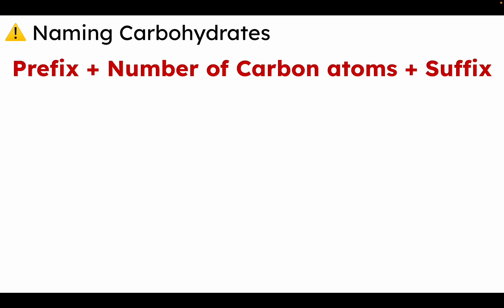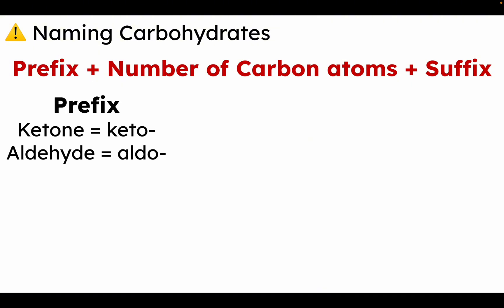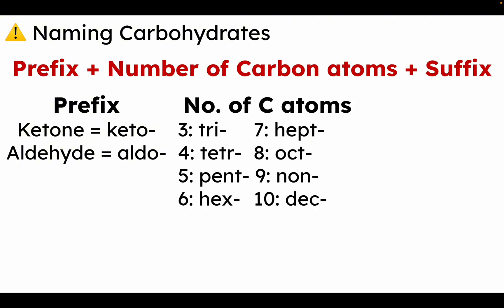Recall from the previous video, we used the formula: prefix plus number of carbon atoms plus suffix. For the prefix, if you see a ketose in the Fischer projection, the prefix would be 'keto.' If you see an aldehyde, the prefix would be 'aldo.' For the number of carbon atoms, we use simple prefixes: tri for three, tetra for four (dropping the 'a'), pent for five, hex for six, hept for seven, oct for eight, non for nine, dec for ten, and so on. For the suffix, we always add '-ose.'